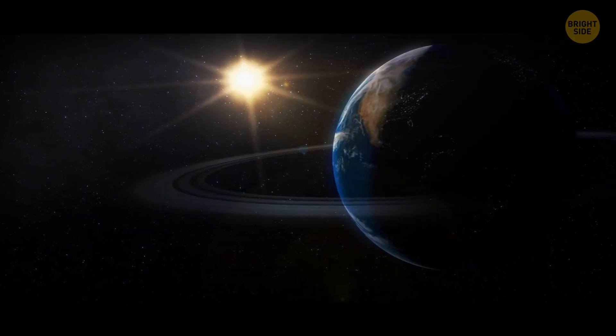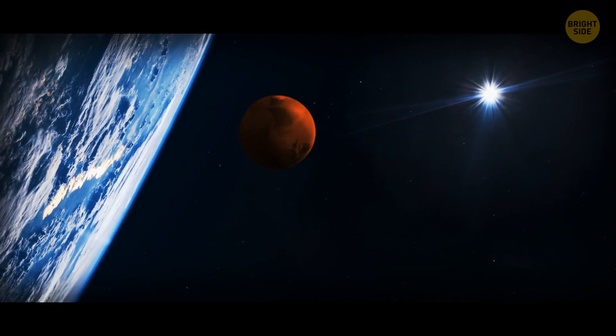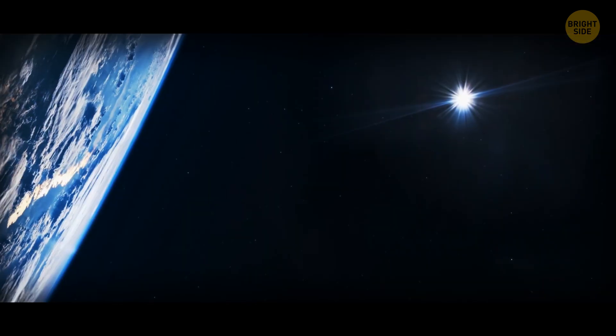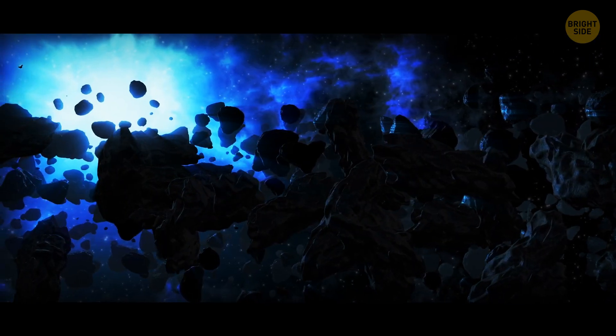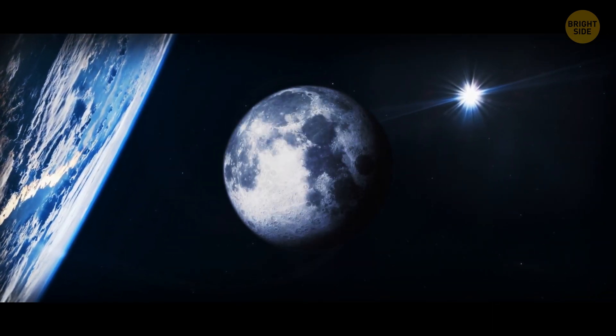Some theories even say that Earth used to have a ring system. A long, long time ago, our planet collided with a Mars-sized object, which most likely resulted in a dense ring of particles and debris. But our story was a bit different than the outer planets, and those rings probably combined and formed the moon.